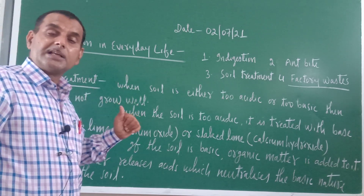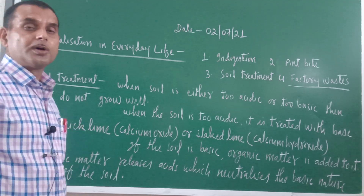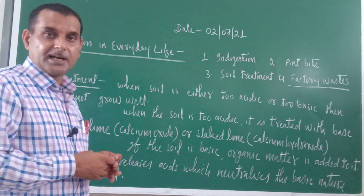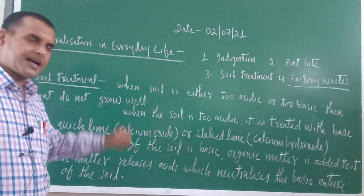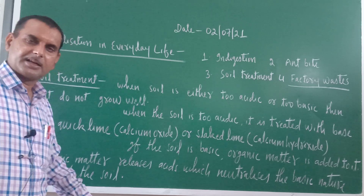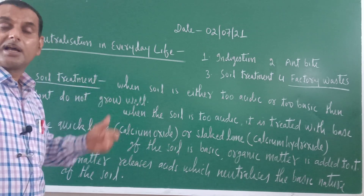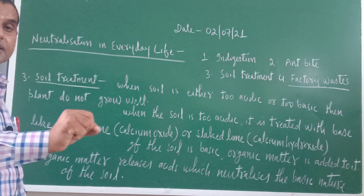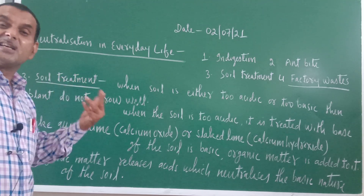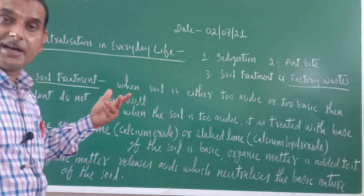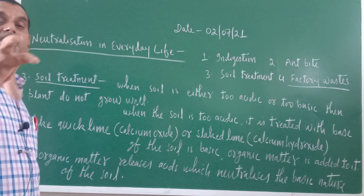If soil is too acidic, we need soil treatment. Some basic substances like quick lime — chemically calcium oxide — or slaked lime — chemically calcium hydroxide — should be added to the soil. These basic substances neutralize the acidic nature of the soil. Since quick lime and slaked lime are basic in nature, they neutralize the acidity of the soil.